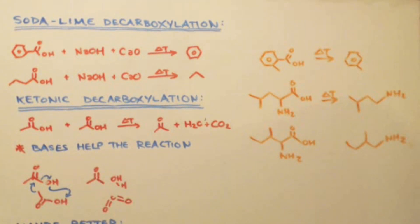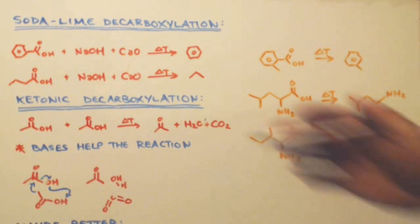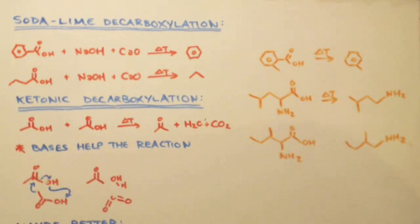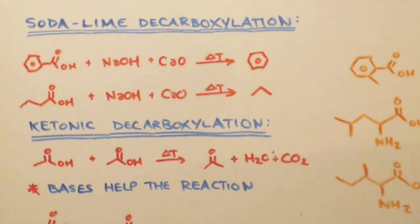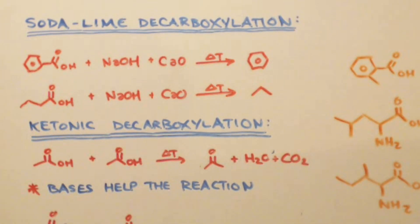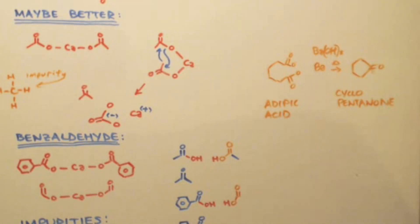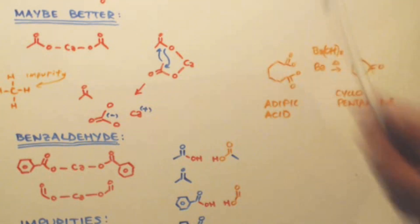A better method might be to use the calcium salt of the acid instead of the free acid. I'm still using acetic acid. By using the calcium salt, you have a built-in CO2 scrubber — it's going to make calcium carbonate instead of releasing CO2, and you don't want free CO2 because this is a reversible reaction and you don't want it to revert. That might be why the calcium salt method is better. I would still throw in some calcium oxide to help soak up the carbon dioxide. All of this is guesswork — the reaction works, but the mechanism is the guesswork.